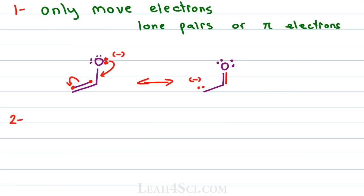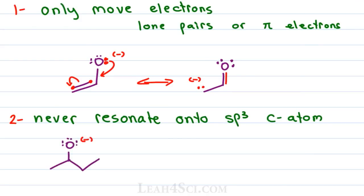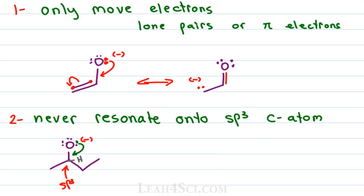Rule number two is another very common mistake: never resonate onto an sp3 carbon atom. Say I have a molecule with a negative charge on an oxygen. If I take those electrons and try to resonate them down to carbon, carbon would get an overfull octet — it starts out with a complete octet of eight, and if I bring that pi bond down, I have ten electrons. Because the carbon atom is sp3 and single-bonded to four different atoms — don't forget the invisible hydrogen — if oxygen forms a pi bond, we don't have any other bond to break. So there's no resonance form for this starting molecule.